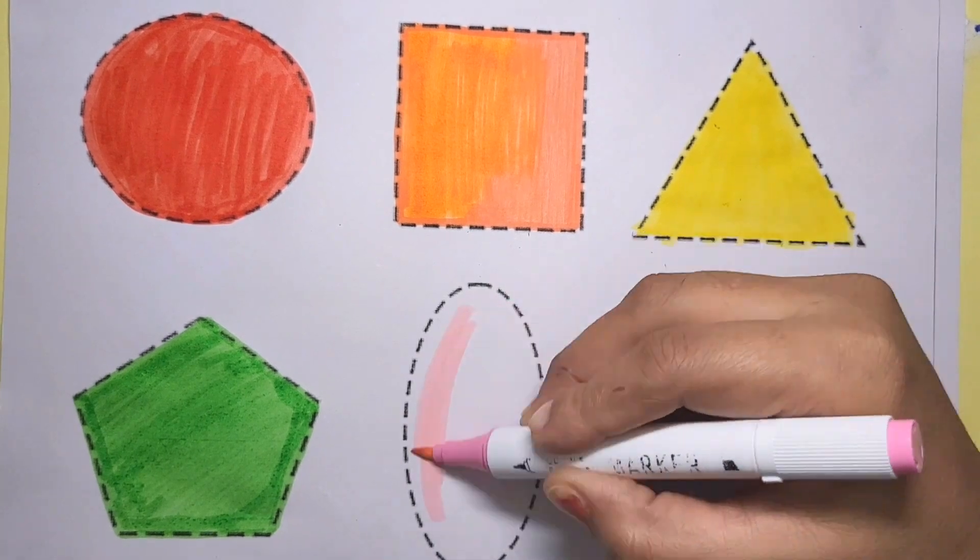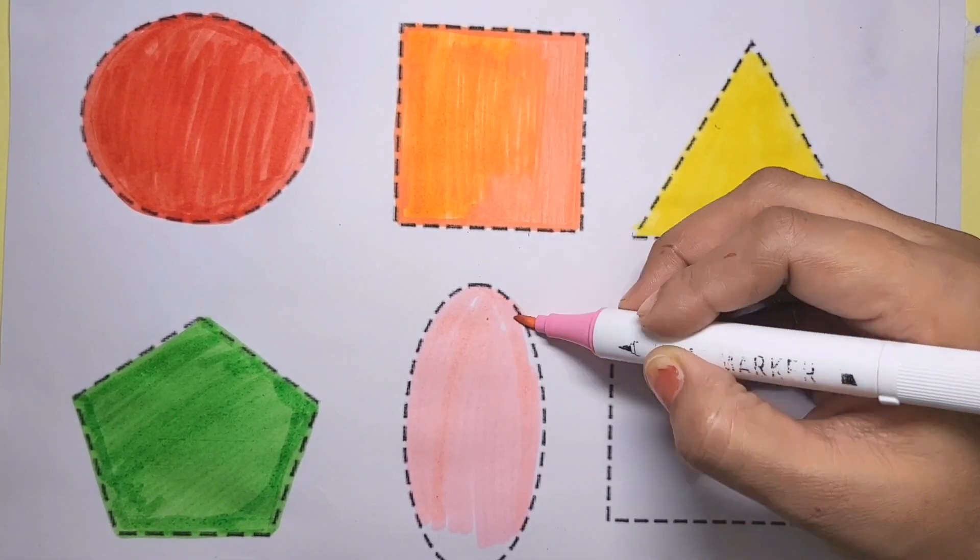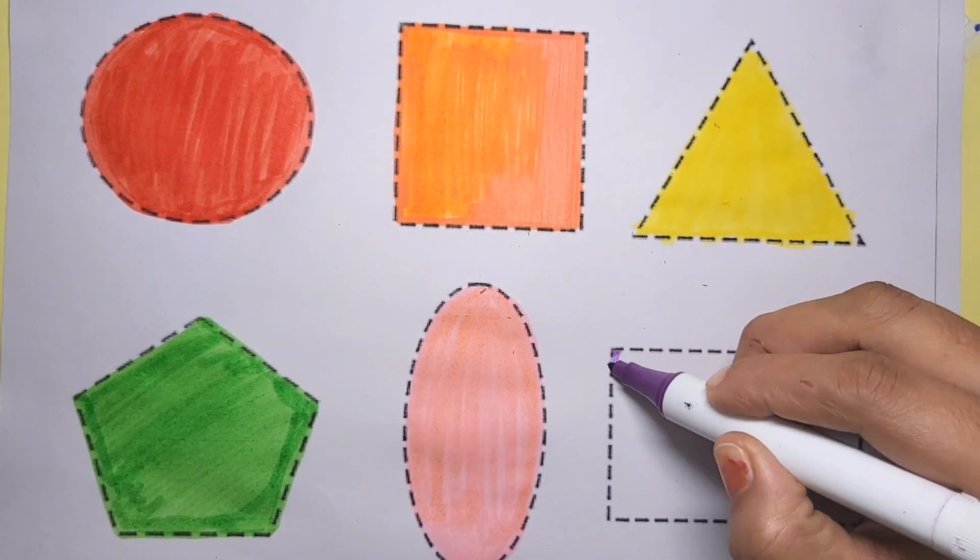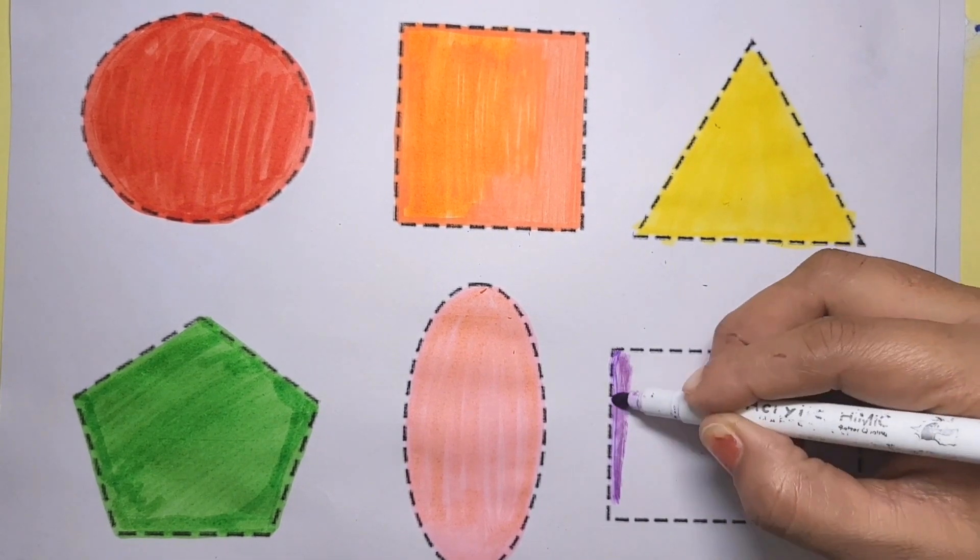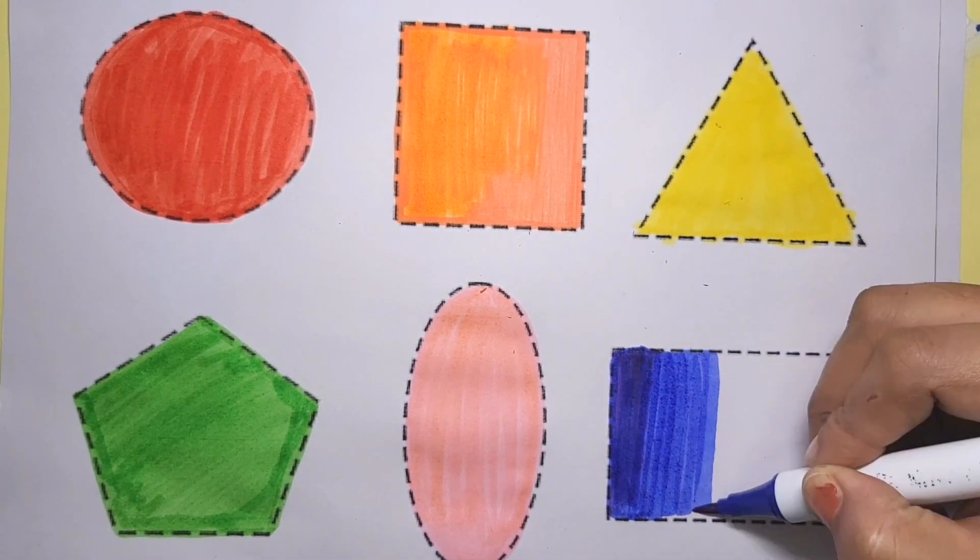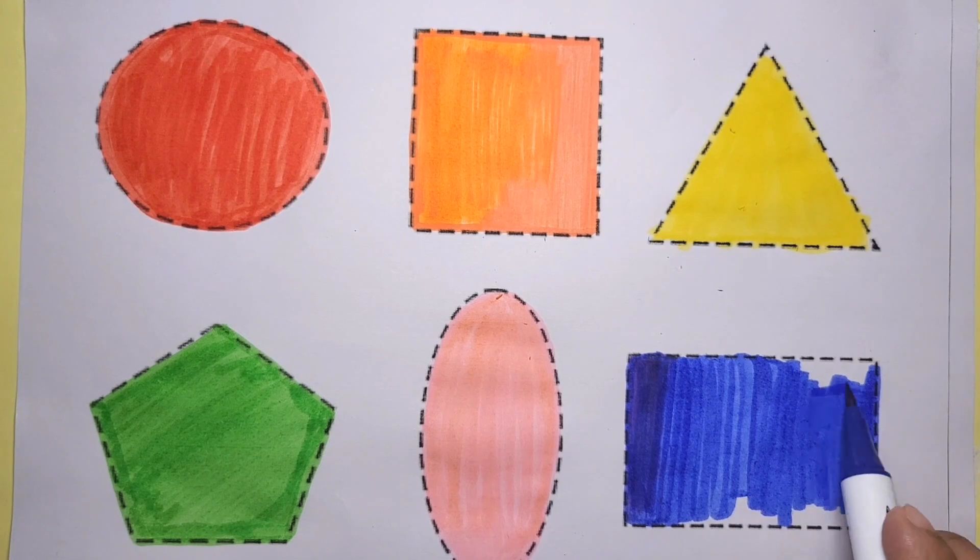Oval shape, pink color. Rectangle shape, purple color, blue color.